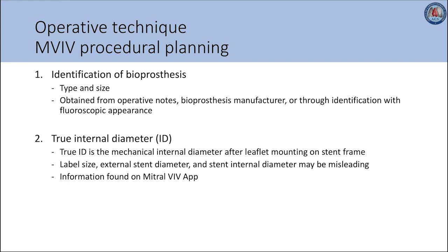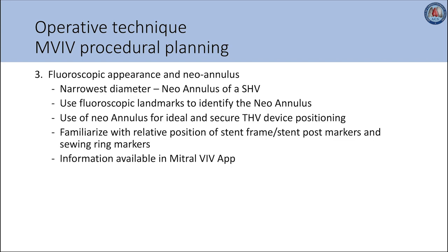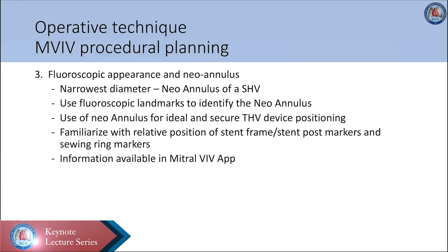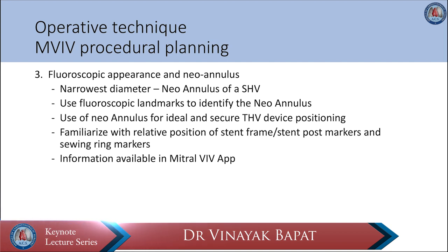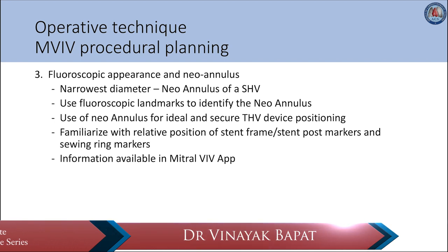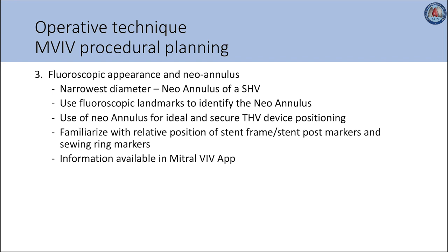True ID information for specific valve types and sizes can be easily found on the mitral valve-in-valve app, which was created by Dr. Vinny Vapat. Understanding the unique fluoroscopic appearance of each surgical valve is critical in performing the procedure successfully. An important region is the narrowest diameter of the surgical valve, referred to as the neoannulus. Using fluoroscopic landmarks to orient oneself, it is important to identify the level of the neoannulus, as this is relevant for ideal and secure transcatheter heart valve positioning. Familiarizing with distinguishable fluoroscopic appearances of different devices is critical, and this information is readily available in the Mitral Valve-in-Valve app.